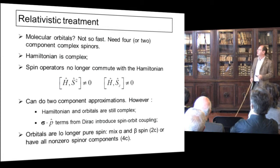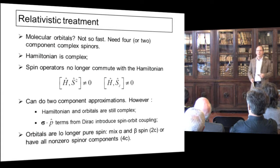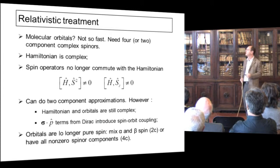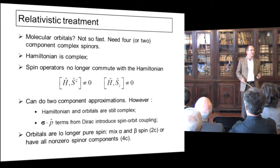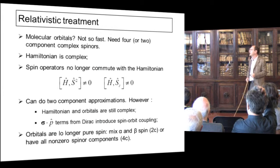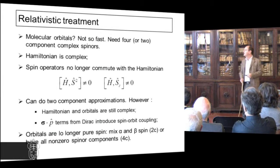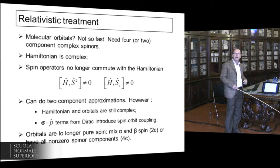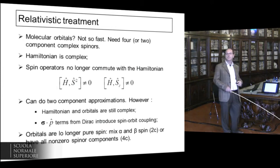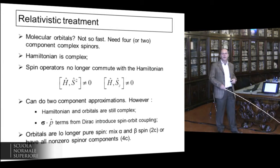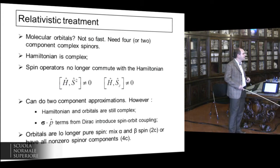The relativistic treatment is different. You have spinors — two or four-component complex spinors. The Hamiltonian is complex and no longer commutes with S² or Sz. In two-component approximations, the orbitals and the Hamiltonian are still complex, and you have spin-orbit from the σ·p term from the Dirac equation — that is the first new bit of physics. The orbitals are no longer pure spin, so you cannot separate alpha and beta anymore.